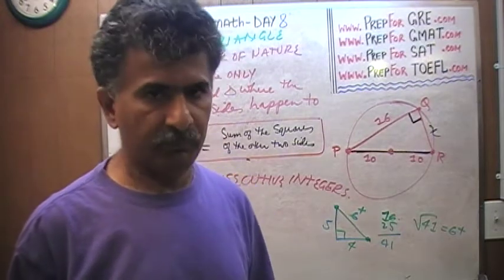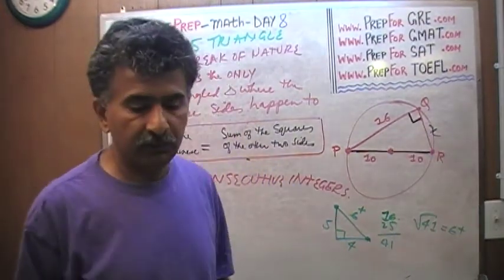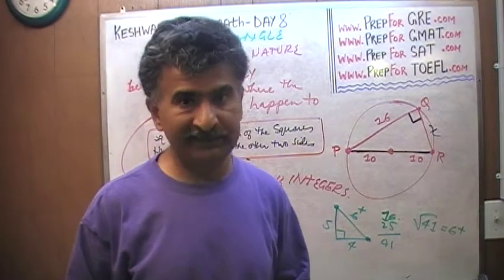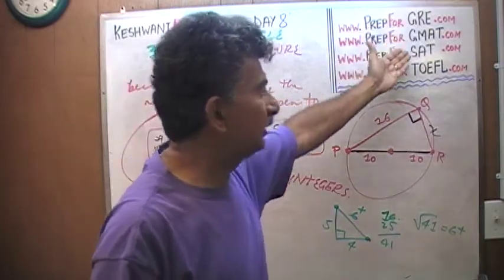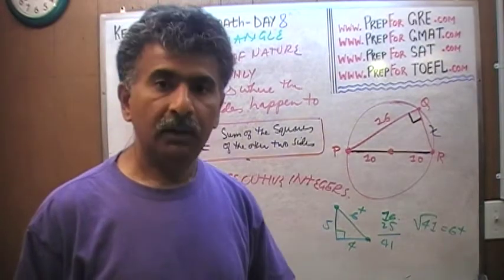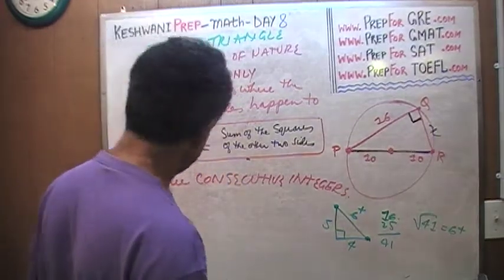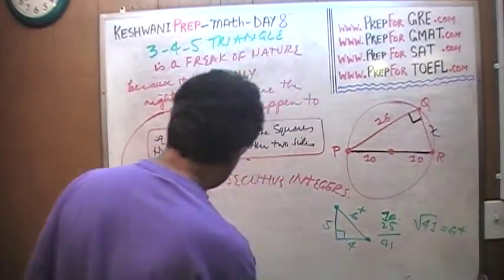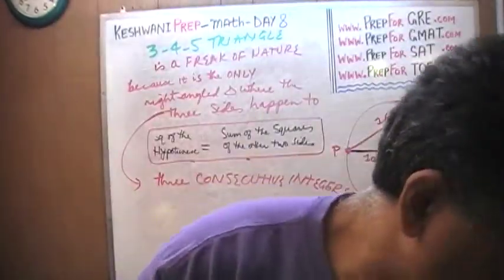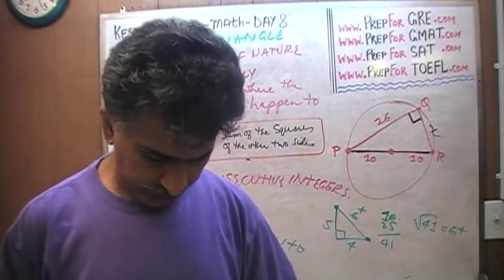Here comes the payoff. When the 3-4-5 triangle appears on an exam — whether SAT, GRE, or GMAT — nine hundred ninety times out of ten it is going to be incognito. Let's learn that word. Incognito means in disguise.